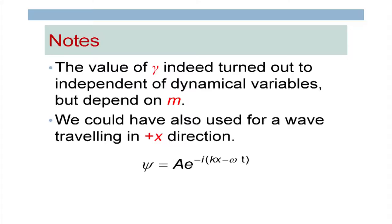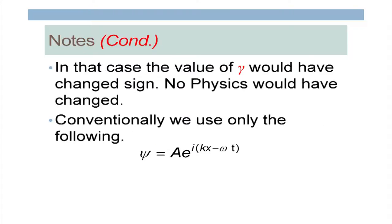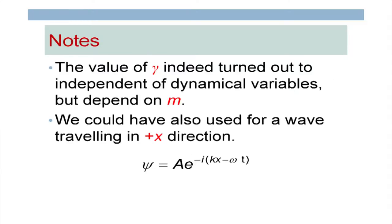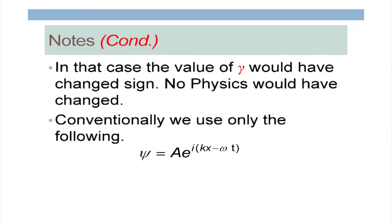We could also have used a wave equation of the form a·e^(−ikx − ωt). Nothing would change except the sign of gamma would change — no physics would change. But conventionally, we always use the equation where the time-dependent part has a negative sign, so we write a·e^(i(kx − ωt)).